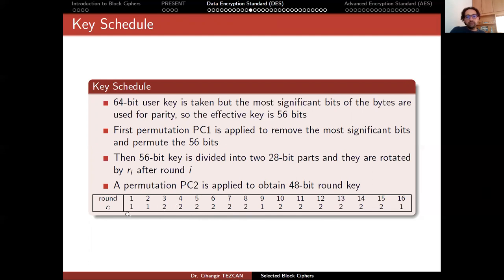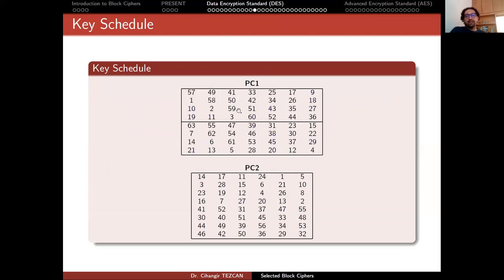In the first two rounds you rotate left by one bit; in the others it is two, one, two, and so on. You apply the PC1 permutation to the two 28-bit parts and PC2 to produce the final 48-bit round key. These permutations are given as a table: the 57th bit is placed as the first bit, and so on. The ordering goes: first bit, second bit, third, fourth, fifth, sixth, seventh, eighth.